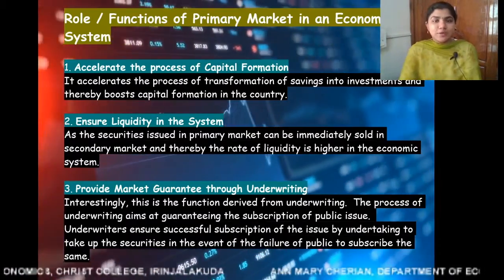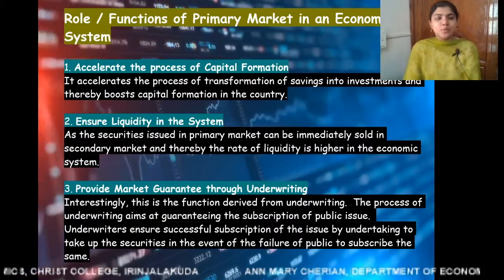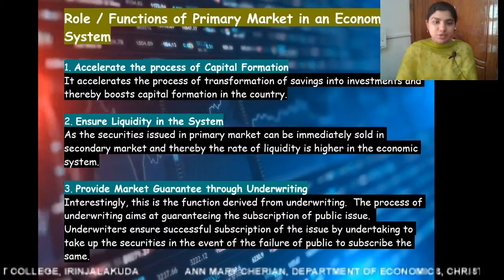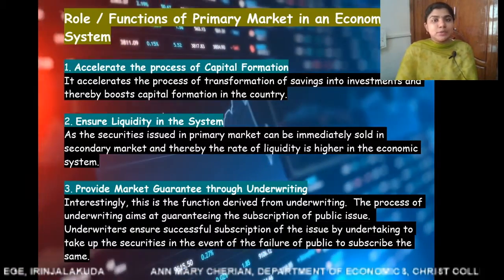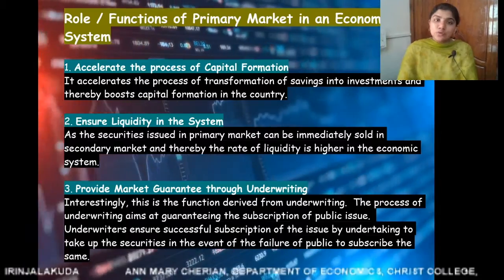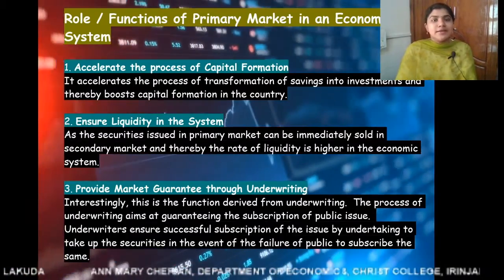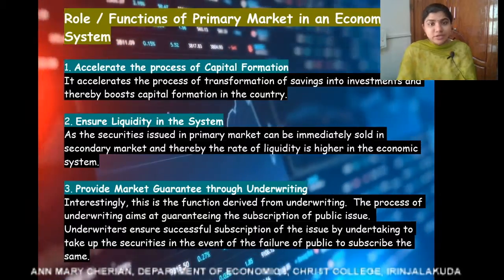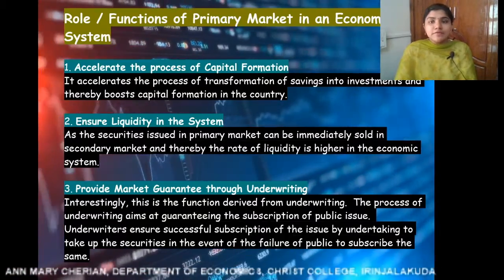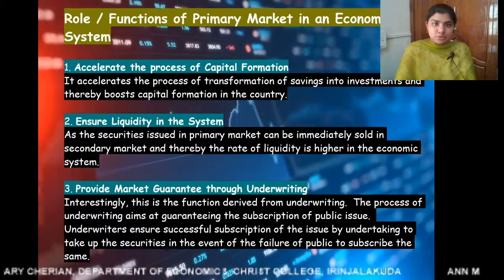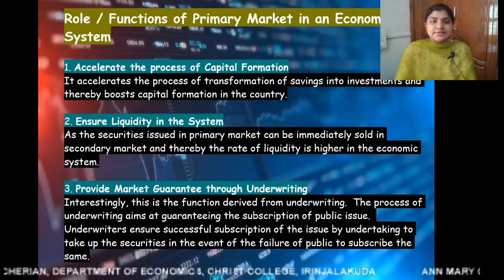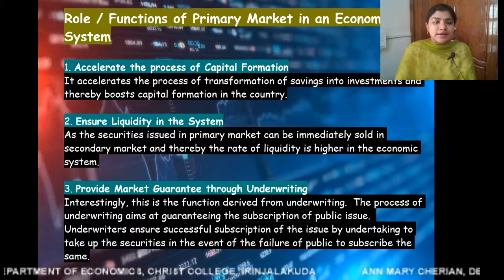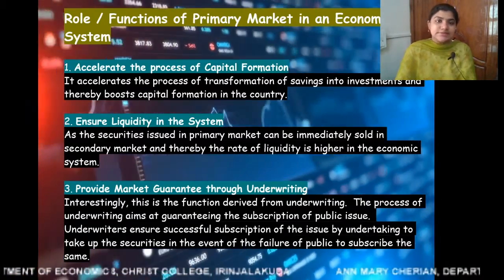The third important function of the primary market is that it provides market guarantee through underwriting. Primary market provides market guarantee to the issuer company through underwriters, who are important intermediaries in the primary market. When an issuer company issues a bond or securities in the primary market, they face uncertainty about the subscription of their public issue, and underwriters provide that market guarantee.